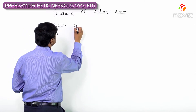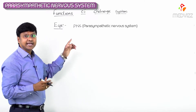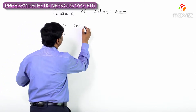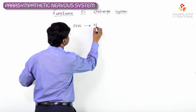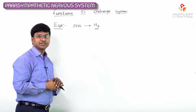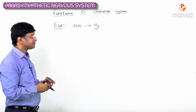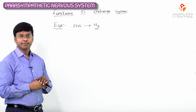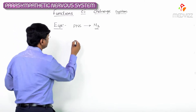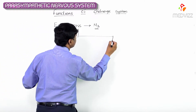The cholinergic nervous system — that is the parasympathetic nervous system — acts on the eye by acting on M3 receptors. The receptors present within the eye are the M3 receptors. This parasympathetic nervous system or cholinergic nervous system will stimulate the sphincter pupillae.